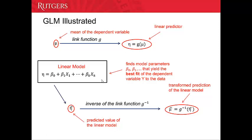We need to clarify that if the link function is not linear, then the mean of the dependent variable and the linear predictor eta are not linearly related — which means the mean of the dependent variable and the independent variables are not linear related. After examining the linear model, we find parameters beta1, beta2, beta3 that provide the best fit for the linear model and yield the best fit for dependent variable y.